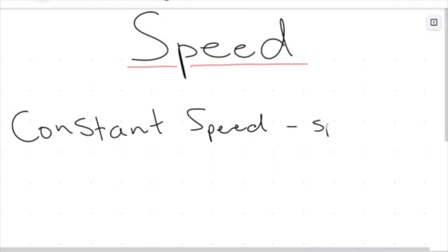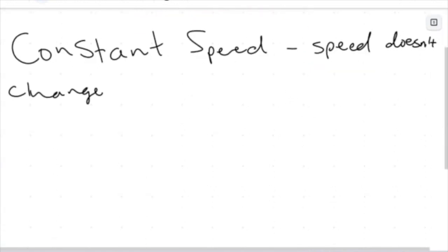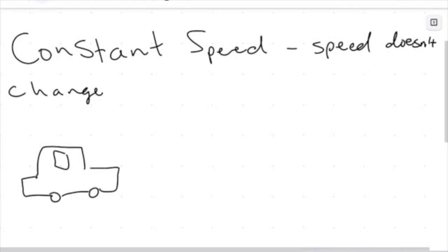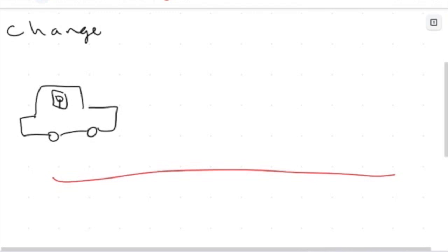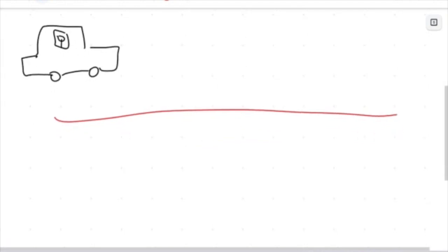A constant speed is when the speed doesn't change. Imagine you are in a car driving along a highway. When you get on this highway, you flick on the cruise control — there's open road ahead of you and you just want to relax a little bit. Please don't actually relax behind the wheel, of course. You're just going to flick on cruise control so you don't have to worry about the speed changing. You find the speed limit and flick on cruise control.